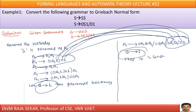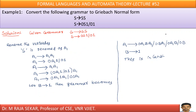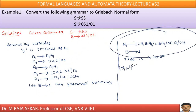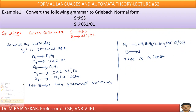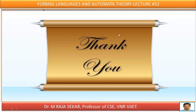Therefore, now this particular grammar is in GNF. The reason: GNF means each production starts with a small letter — 0 is a small letter, and all the remaining letters are capital letters. Only a small letter followed by capital letters is required, and this grammar satisfies that. 100%, there is no doubt — this grammar is in Greibach Normal Form. Thank you very much.